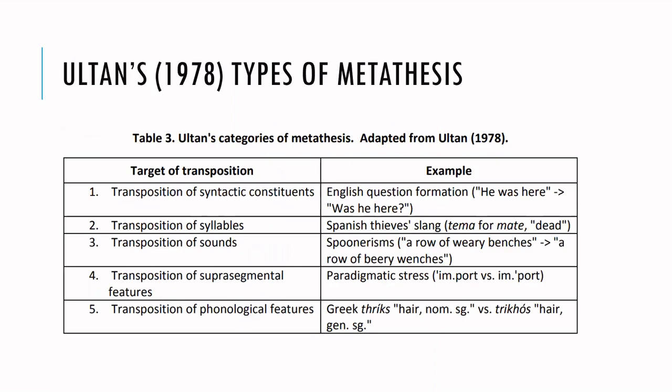I'll give a few background typologies of metathesis before we get into the data. Ultan 1978's categories are as follows. Number one, the transposition of syntactic constituents — metathesis can apply to syntax as well, for example in English question formation, going from 'he was here' to 'was he here?' Number two, the transposition of syllables, for example in Spanish slang when tema is substituted for mate. Number three, the transposition of sounds or segments, for example in the spoonerism where a row of weary benches becomes a row of weary wenches.